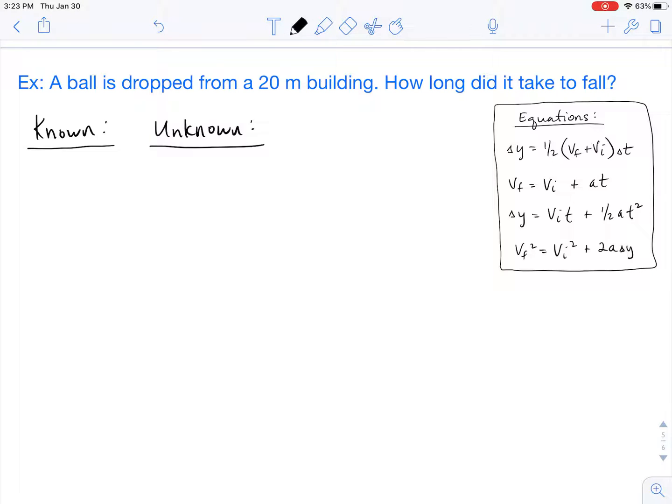So as always we should start with our knowns and our unknowns. They tell us that the ball is dropped, so that in itself is a known value because when things are dropped we know that the initial velocity is 0 meters per second.